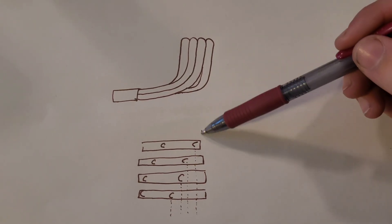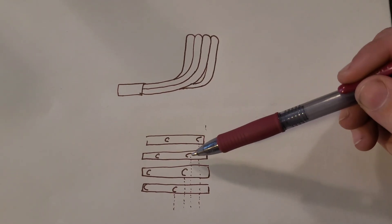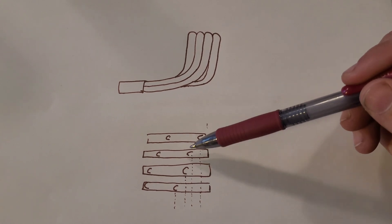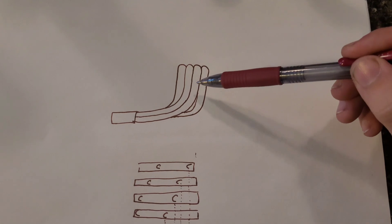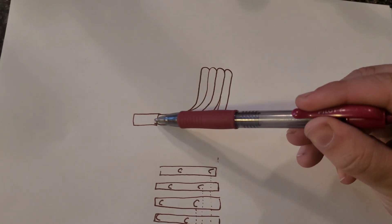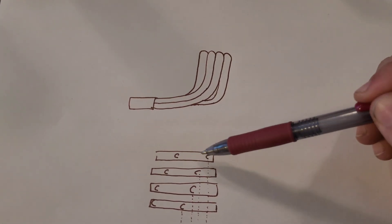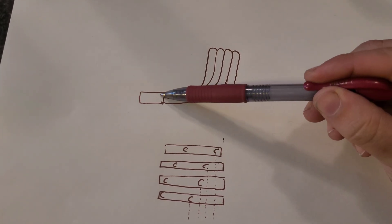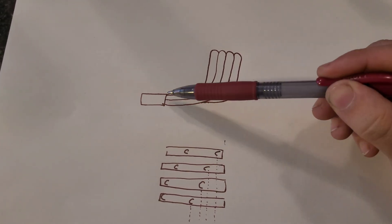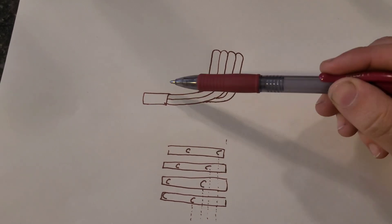See, the point of equal length headers is they want each exhaust pulse to be evenly spaced out one after the other. So when it comes down the tube and enters the collector, one pulse will enter the collector first, help draw out this pulse, which will help draw out that pulse, which will help draw out that pulse. Makes sense.